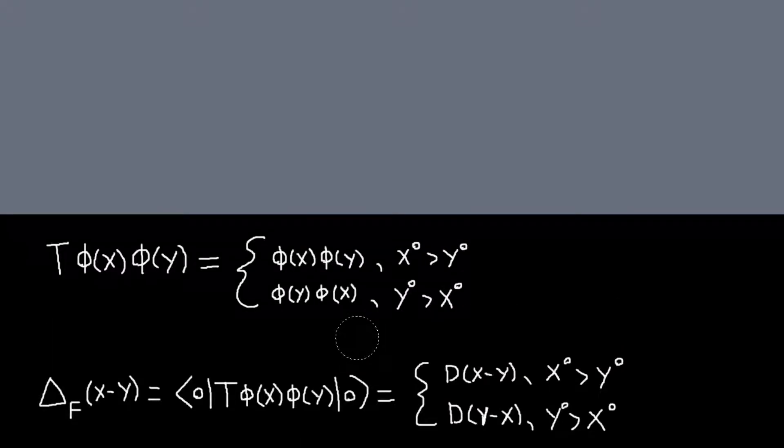So anyway, what he next does is he defines this thing called the Feynman propagator. And it is just going to be this thing. So we evaluated, without the T before, this thing. We called it D of x minus y.